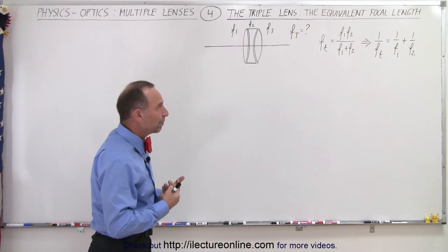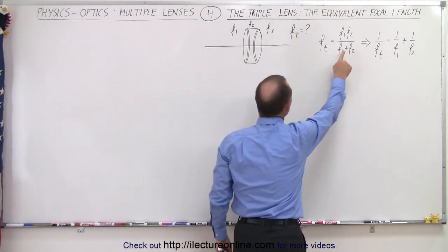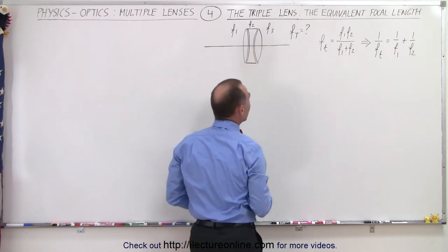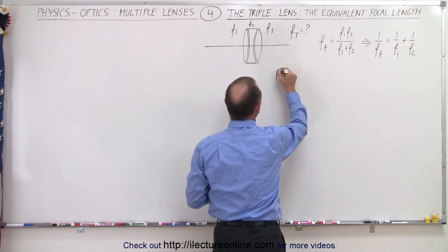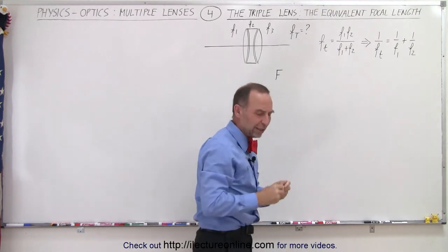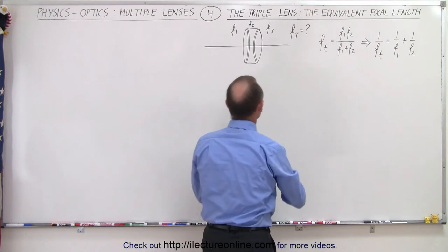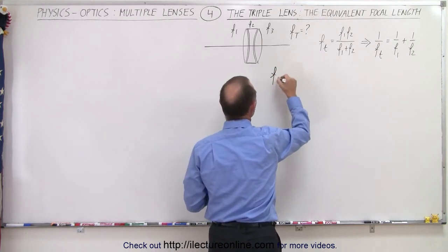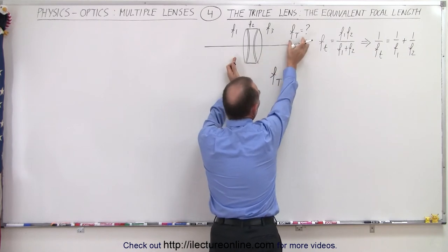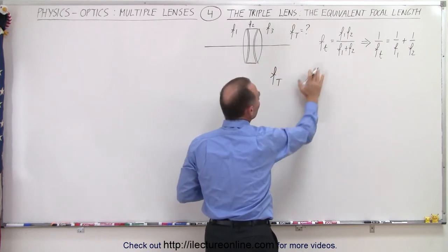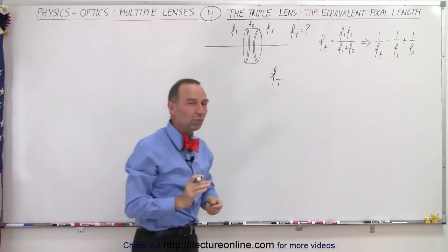So how do we approach that? Well, let's assume for a moment that one of these two is already the combination of two of the lenses. So what we can do is as follows. We can say that the total focal length of the three combined, we're going to denote that with capital F and capital T, and then we're going to denote the focal length of just the first two as equal to f with a small t.